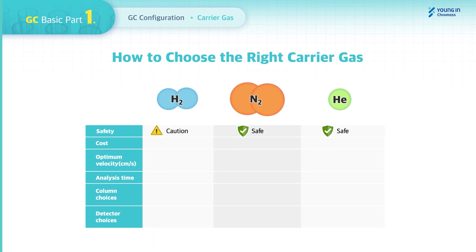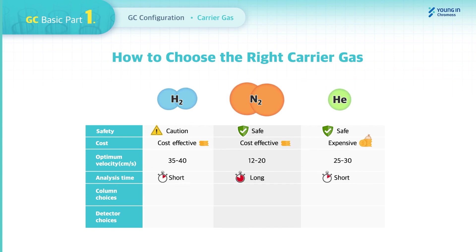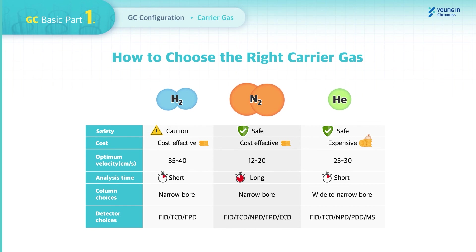Safety: Hydrogen is not safe due to a possibility of explosion, while Nitrogen and Helium are relatively safe. Cost: Hydrogen and Nitrogen are cost-effective, but Helium is expensive. Optimum velocity: 35–40 cm/s for Hydrogen, 25–30 cm/s for Helium, and 12–20 cm/s for Nitrogen, meaning Nitrogen has a longer analysis time. Helium offers a wide range of column choices from wide to narrow bore, and there are various detector choices by carrier gas as shown in the table.